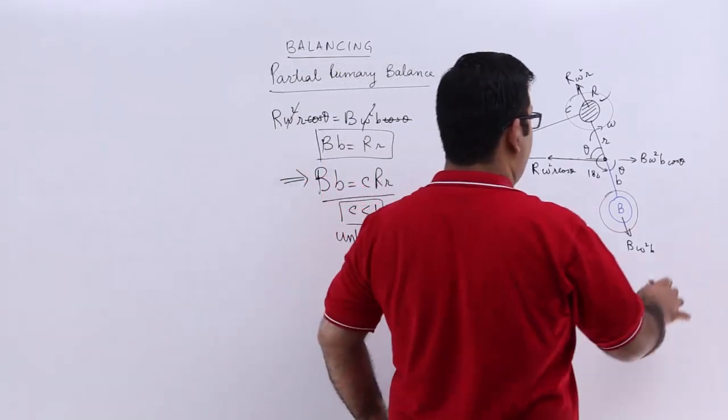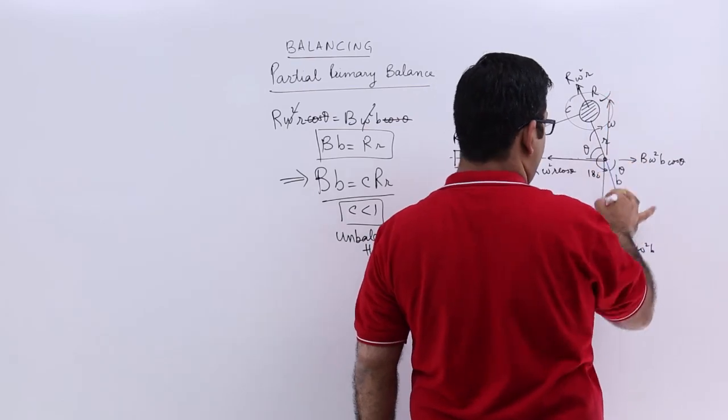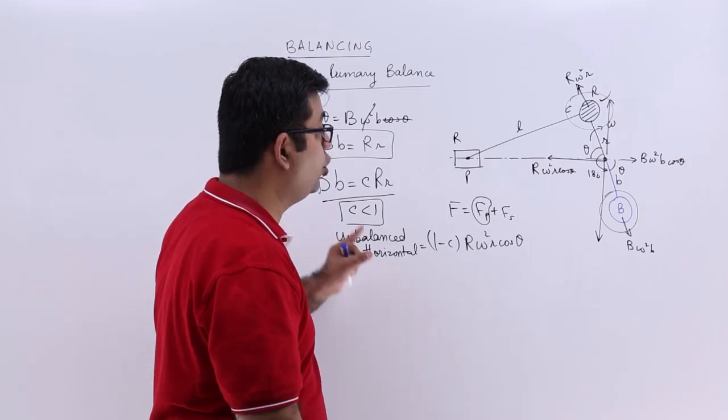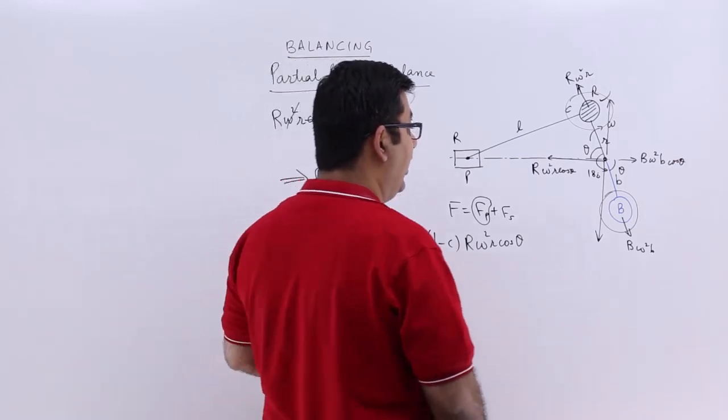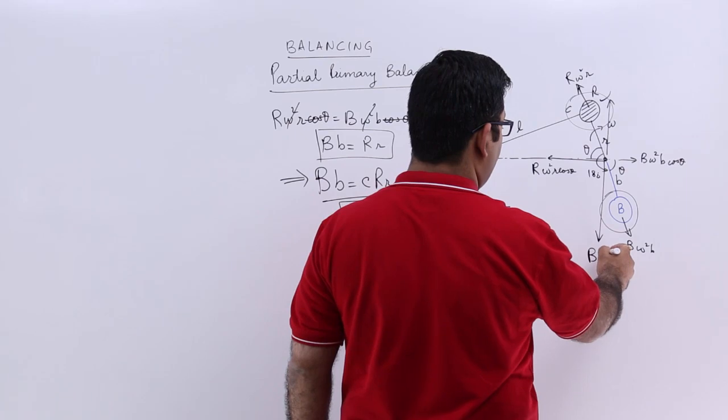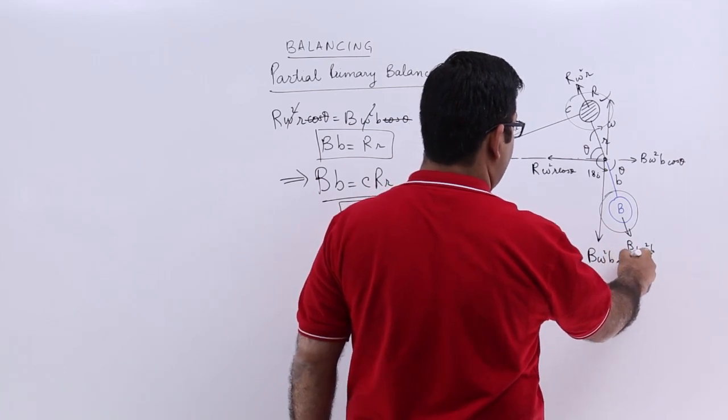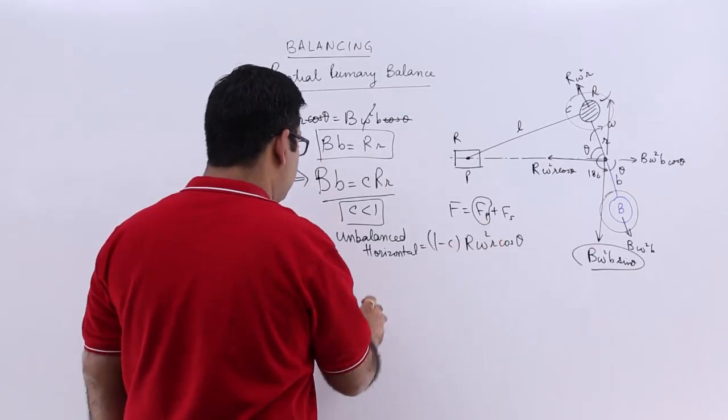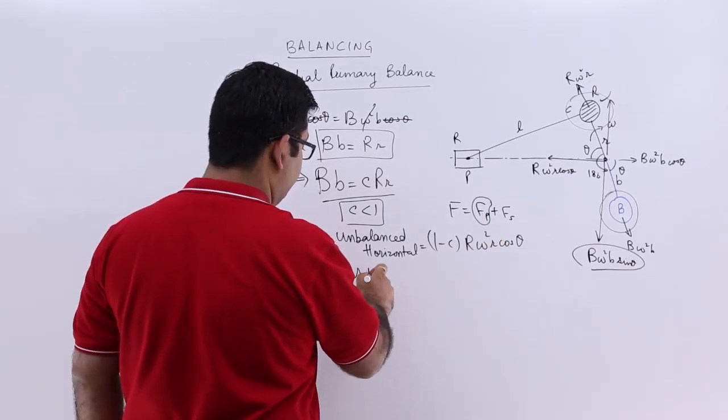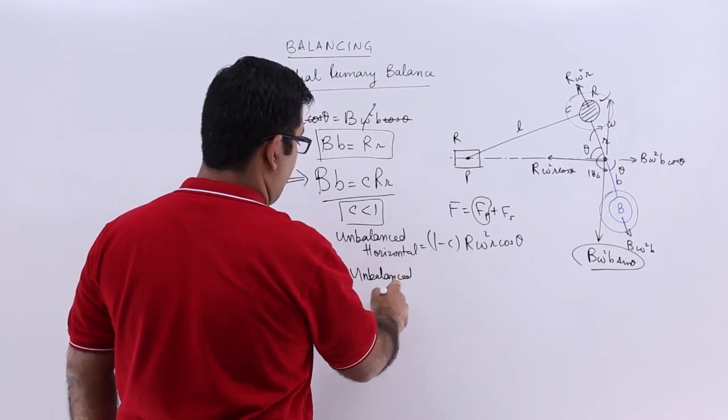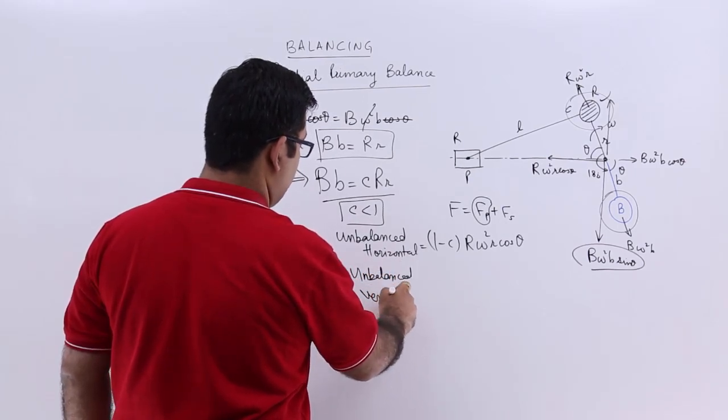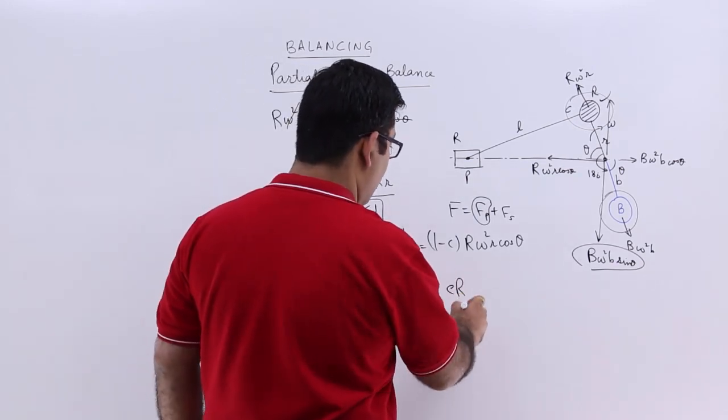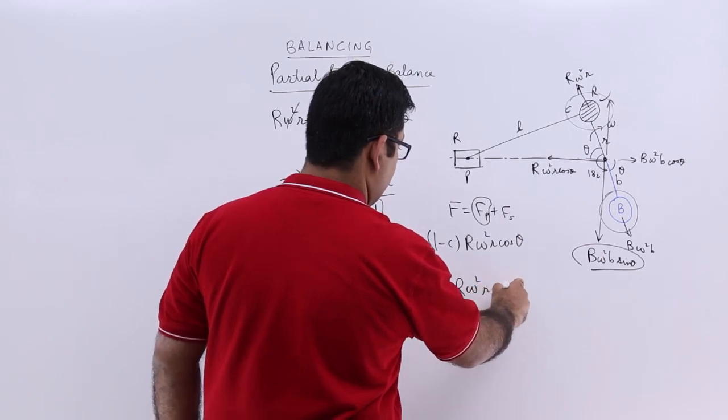Then you have a component which is the perpendicular component, which is perpendicular to the line of stroke. And that would be B omega square b sin theta. Now this is not balanced. This means this will stay unbalanced. And I would say unbalanced vertical force, this would be c into R omega square r sin theta.